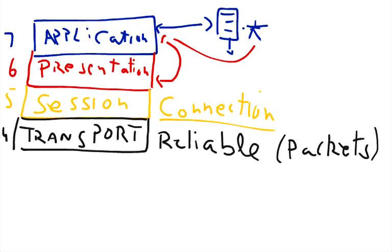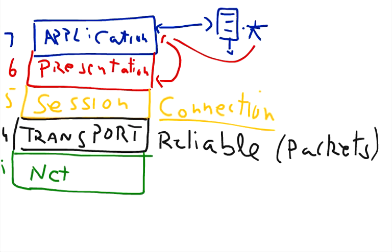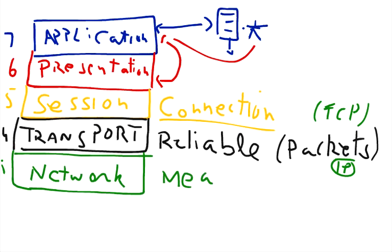Under the transport layer we have a layer called the network layer. I would like to tell you that TCP — the Transmission Control Protocol — works roughly on the transport layer, and the IP protocol works roughly on the network layer. The main purpose of the network layer is to provide means of transferring variable lengths of data, which are called datagrams.